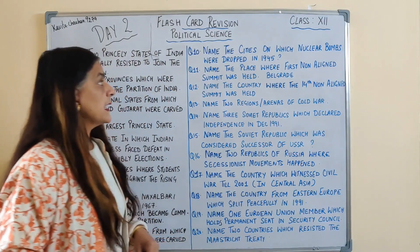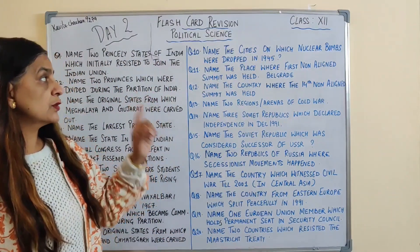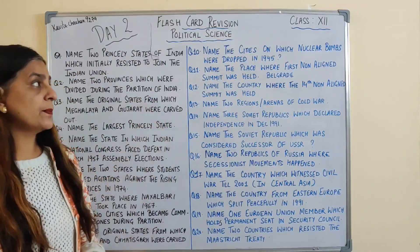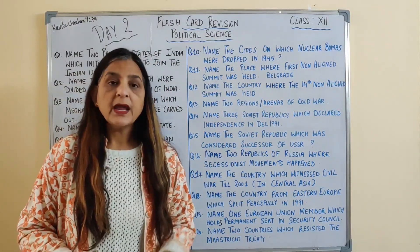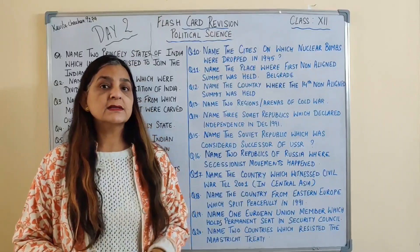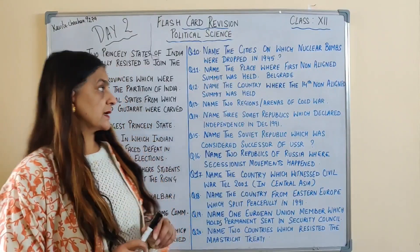Next question: name the cities on which nuclear bombs were dropped in 1945, and the answer is Hiroshima and Nagasaki.